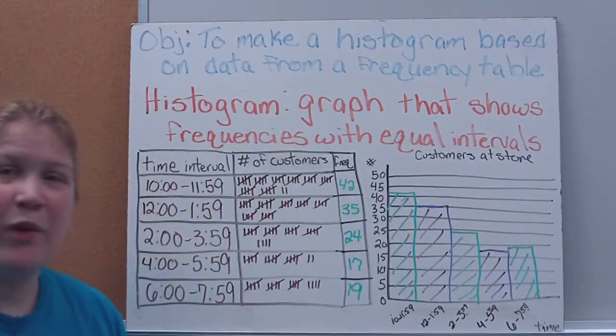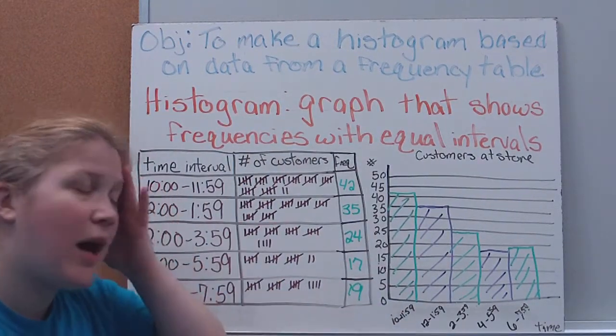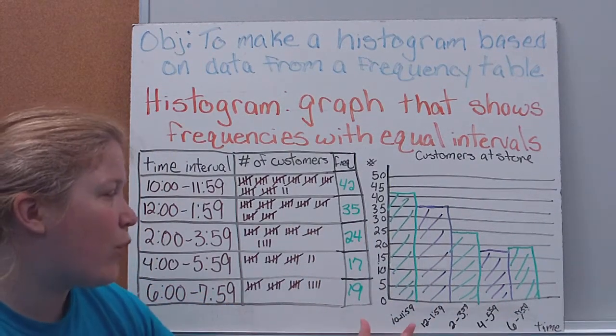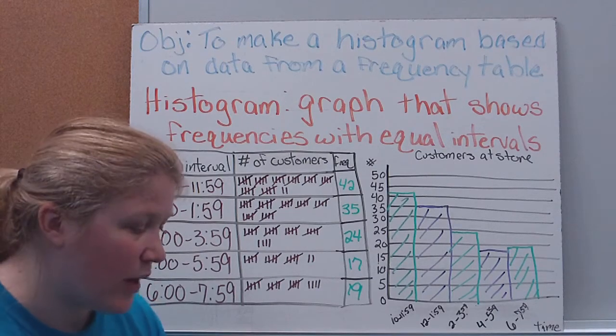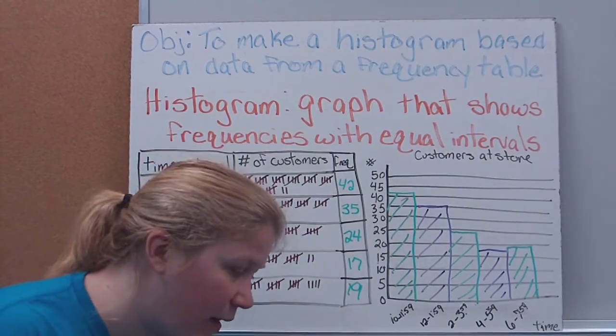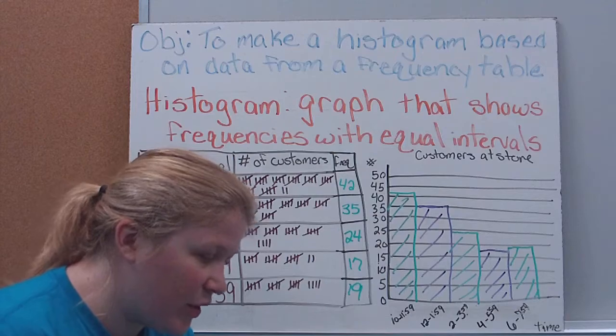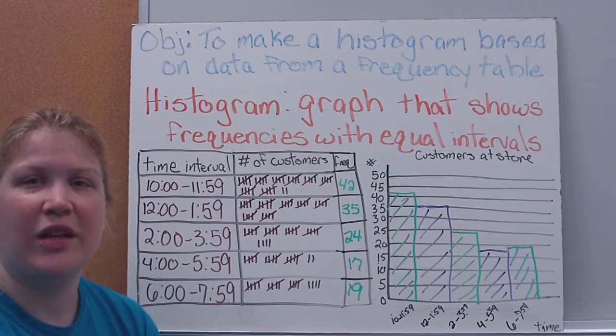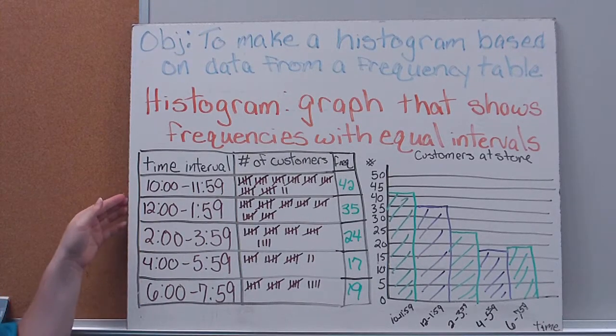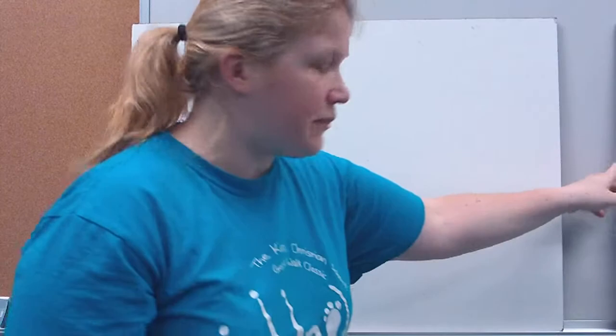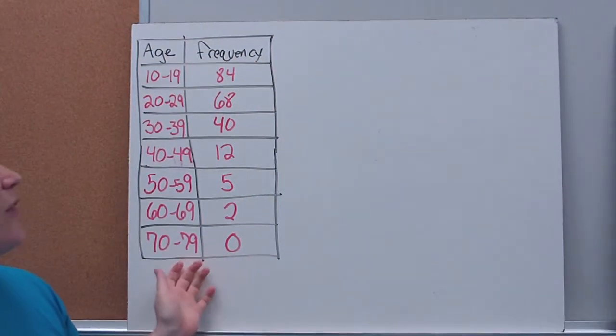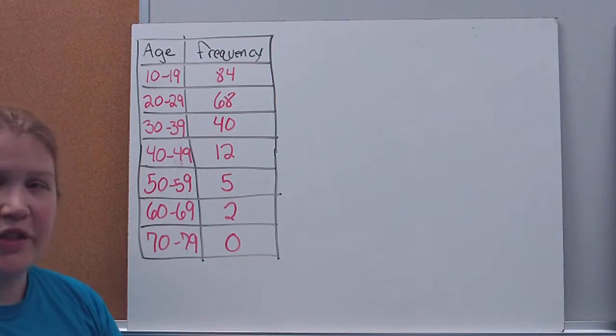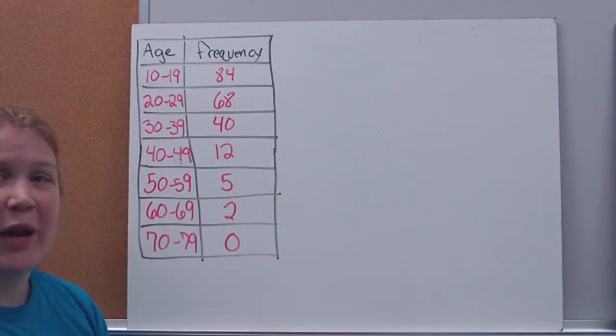So you'll notice that we drew the bars the same way that we would draw them for a bar graph. The only difference is they're all touching each other, and we're dealing with intervals instead of one specific time. So now I'm looking at the time intervals here. So then from here, we could draw some conclusions by looking at it. We could ask some questions about it as well. We'll do that on the next one. We'll make another histogram together here.